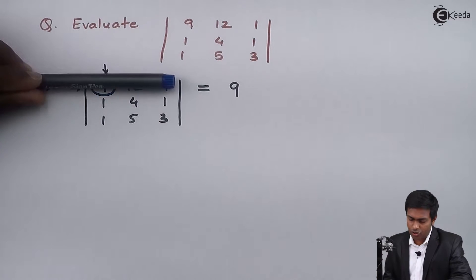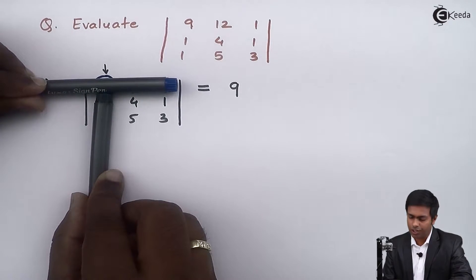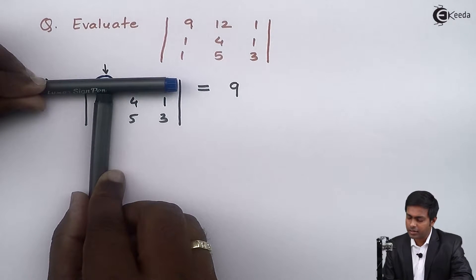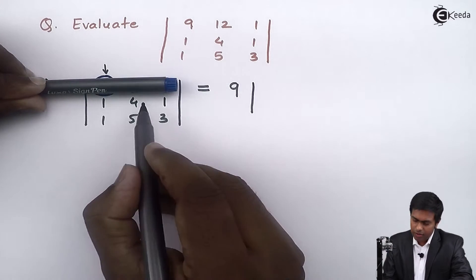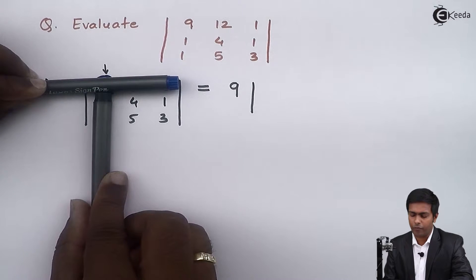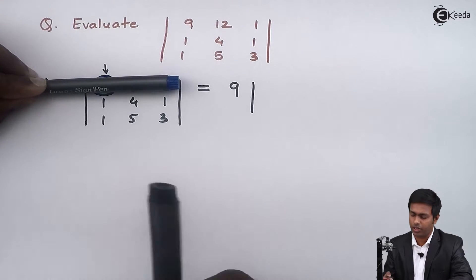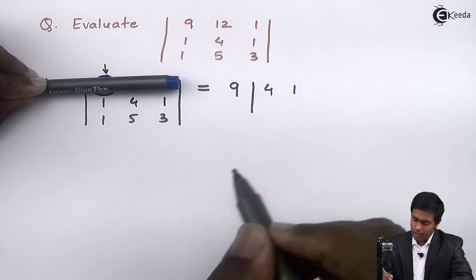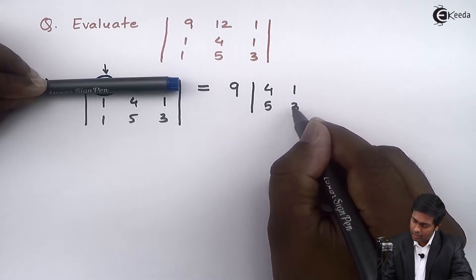By hiding the first row and first column we can see 4 elements: 4, 1, 5, 3. So we'll multiply this number 9 with the determinant of these 4 elements. Remember that you cannot change the order of elements — if 4 and 1 are in the first row we write 4 and 1 in the first row, and the elements of the second row are 5 and 3.